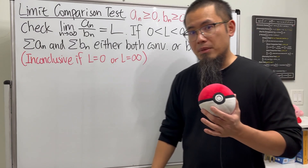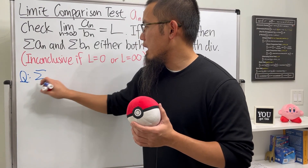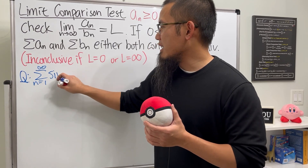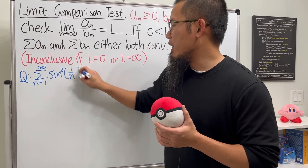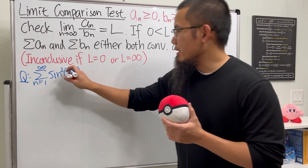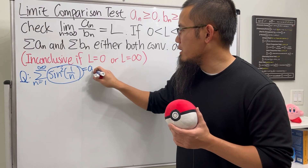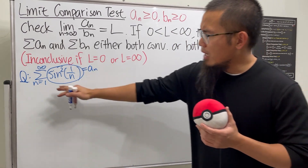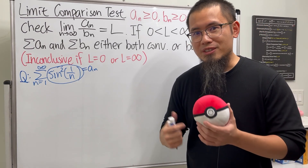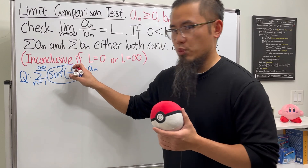Here's the example: let's look at the series from n equals one to infinity of sin²(1/n). This is the series we are trying to analyze, and we'll call this aₙ. We do not know if this series converges or not, so we need to come up with something we know better. Let's look at 1/n.